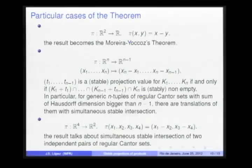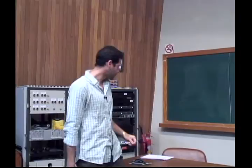And for this other particular projection, the result talks about simultaneous stable intersection of two independent pairs of regular Cantor sets. It means in this case we have a stable intersection of two regular Cantor sets at the same time a stable intersection of other two regular Cantor sets.